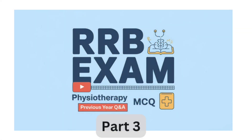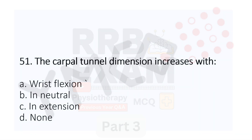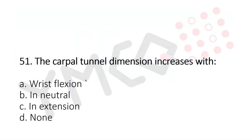Welcome to Part 3. Question 51: The carpal tunnel dimension increases with — Option A: wrist flexion, Option B: neutral, Option C: extension, Option D: none. The answer is Option A, wrist flexion.